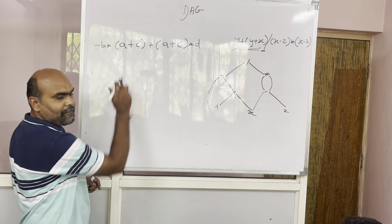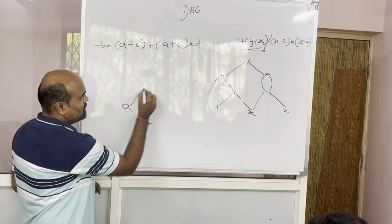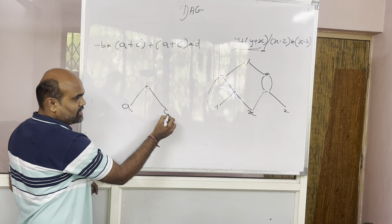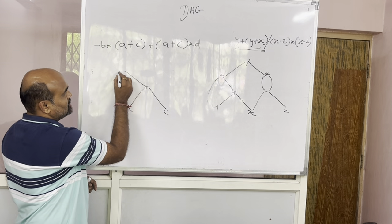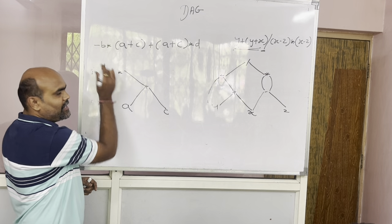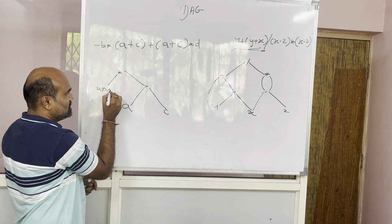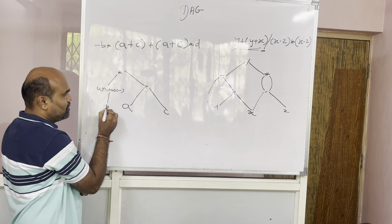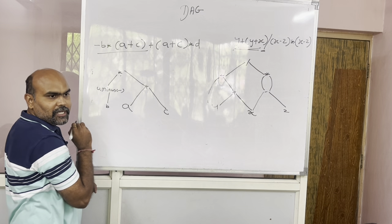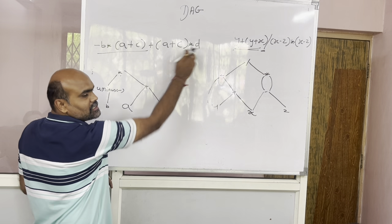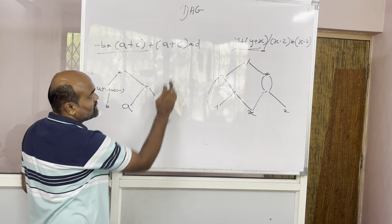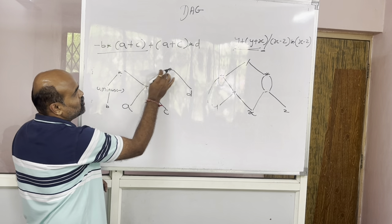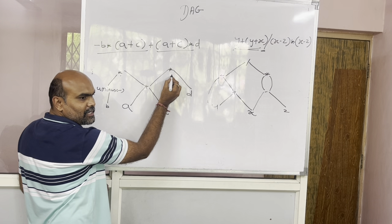So sabse pahle likhenge a plus c. So a plus c, then star. Yeh kya ho gaya aapka — unary minus. Toh unary minus aisa likha jata hai: u minus. This one is b. So d — yeh wala expression yaha pe khatam ho gaya. Again a plus c star d — toh a plus c, this one again, star d.